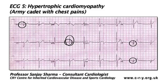If we go back to basics, pathological Q waves are defined as those that are greater than 25% in depth compared with the preceding R wave.